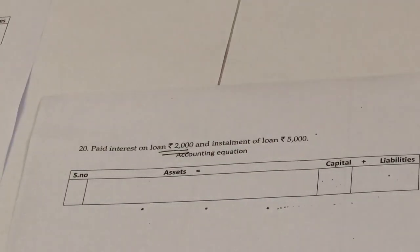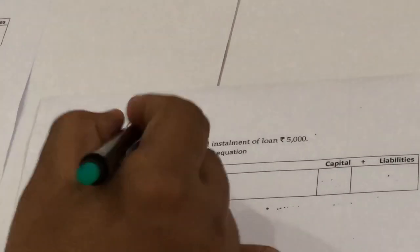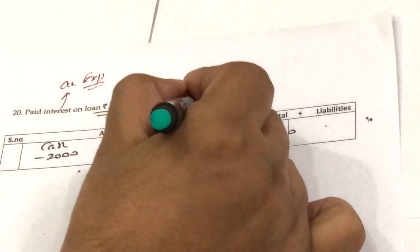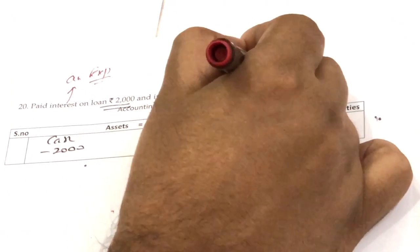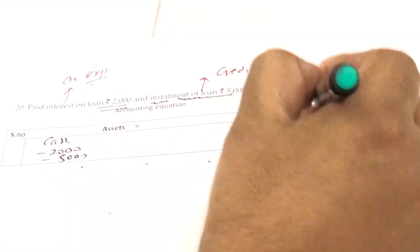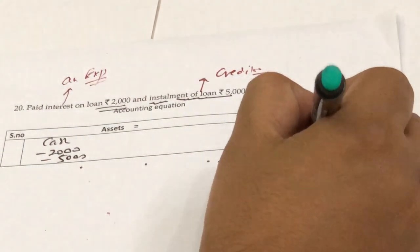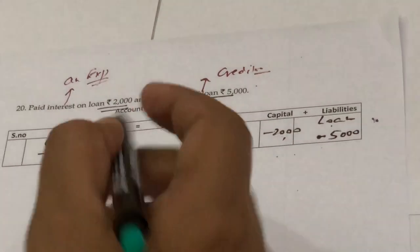This is a very important transaction where students get confused. On this loan, we are paying interest of 2,000 — this interest is an expense for the firm, like rent paid. So we subtract 2,000 from cash and subtract 2,000 from capital. However, if you are paying an installment of 5,000 toward the loan principal, it is not an expense — it is like making payment to a creditor. So you subtract 5,000 from cash and subtract 5,000 from the bank loan column.